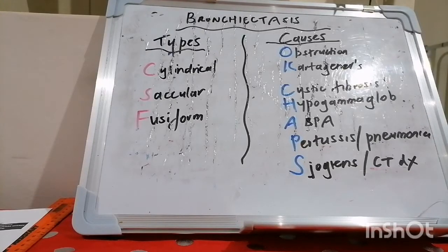A small note on alpha-1 antitrypsin deficiency: the pathophysiology is that there's production of an abnormal protease inhibitor, usually the homozygous form with impaired transport out of the liver. The serum level is only 10 to 15 percent of what would constitute a normal alpha-1 antitrypsin level. As a result, we have increased protease activity which leads to emphysema and cirrhosis in up to 10 percent of patients.